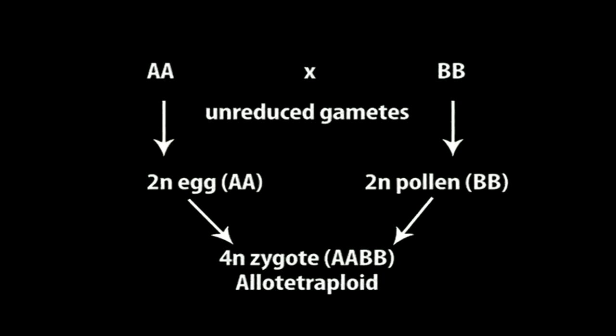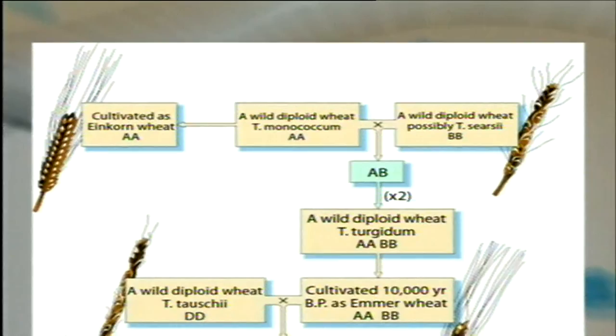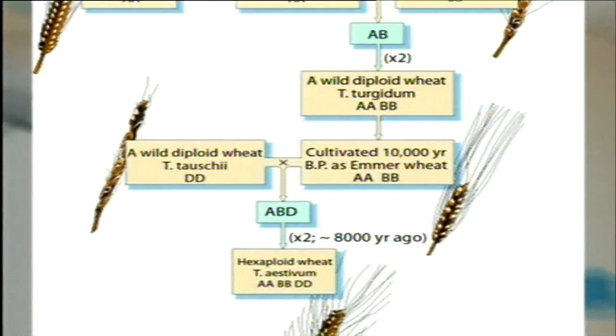Alternatively, after zygote formation between two different diploid species A and B, during further divisions of the zygote there is a failure of cell division following chromosome doubling during the replication phase — resulting in spontaneous chromosome doubling. Allopolyploidy has played a very important role in evolution, and it is said that the majority of our crop plants are allopolyploids.